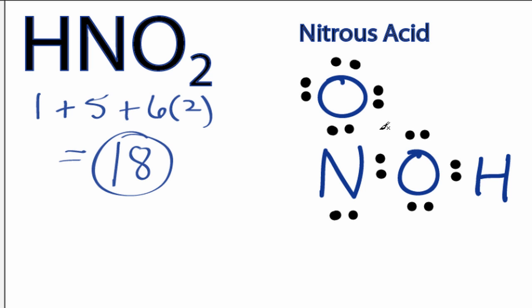All of the atoms have full outer shells, except nitrogen, which only has 6 valence electrons. We can take 2 valence electrons from the oxygen and form a double bond with the nitrogen. By doing so, the nitrogen has a full outer shell, an octet.